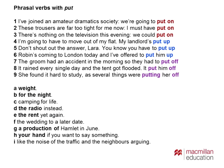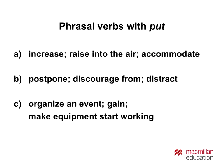Students have the first part of the sentence and the second part, and they match them up. They use context to help them match — for example, knowing about the amateur dramatic society in number one, we know we'll get something related to theatre, so 'a production of Hamlet in June' fits. Then they match meanings grouped by particle: increase, raise into the air, and accommodate are all meanings for put up — three different meanings.